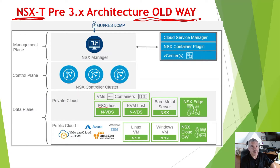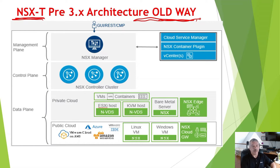Then along came NSX-T — NSX-T for Transformers, which was the code name internally at VMware. NSX-T basically took NSX for vSphere, or NSX-V, to the next level. Today, as of filming, the latest version is NSX 4.1. When NSX 4.0 came out, VMware decided to rename it — it's no longer called NSX-T Data Center; it's now just called NSX.